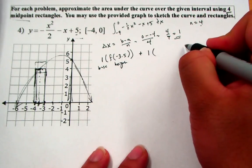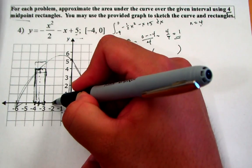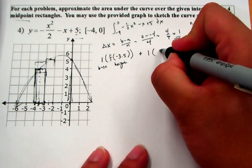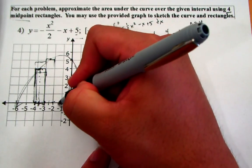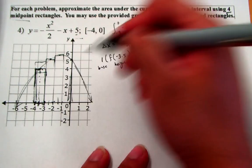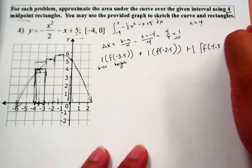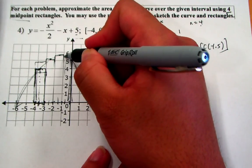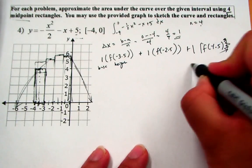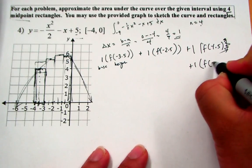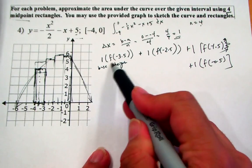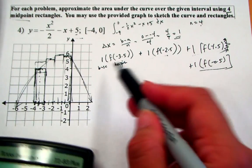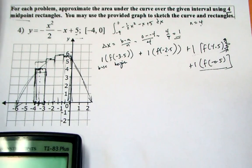My next rectangle also has a base of 1, and the height is determined by the midpoint of the interval from negative 3 to negative 2, which is negative 2.5. So that's 1 times f(−2.5). Continuing the pattern: negative 2 to negative 1 gives midpoint negative 1.5, so base times f(−1.5). And negative 1 to 0 gives midpoint negative 0.5, so 1 times f(−0.5). Notice all rectangles have the same base; it's useful to factor that out.